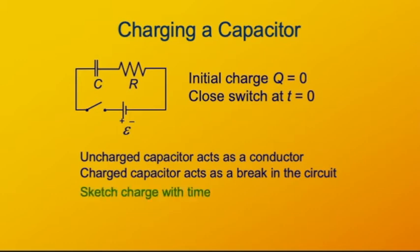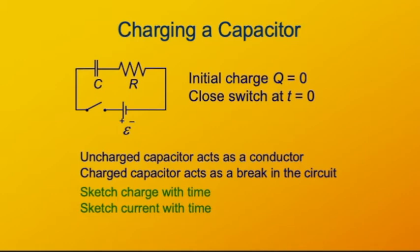Sketch the charge on this capacitor with time: it starts at zero and rises to a maximum value. Then sketch what the current does with time. The current starts at its highest value and decays to zero. Functionally, the charge is going to track like a one minus e to the minus x curve, rising up to its maximum value. The current will track like an e to the minus x curve, decaying down to zero. We can figure out the initial current and the maximum charge using our knowledge of capacitors.